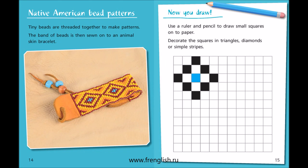Native American Bead Patterns. Tiny beads are threaded together to make patterns. The band of beads is then sewn onto an animal skin bracelet. Now you draw: use a ruler and pencil to draw small squares onto paper. Decorate the squares in triangles, diamonds or simple stripes.